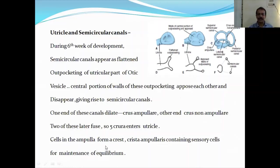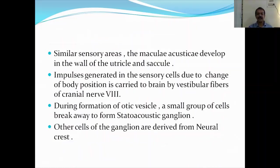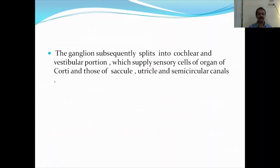Cells in the ampullary region form a crista known as the crista ampullaris, containing sensory cells for the maintenance of equilibrium. Similar sensory areas — the macula acoustica — develop in the wall of the utricle and the saccule. Impulses generated in the sensory cells due to changes in body position are carried to the brain by the vestibular fibers of cranial nerve 8. During formation of the otic vesicles, a group of cells break away to form the statoacoustic ganglia; other cells of the ganglia are derived from the neural crest. The ganglia subsequently split into cochlear and vestibular portions, which supply sensory cells of the organ of Corti and those of the saccule, utricle, and semicircular canals.